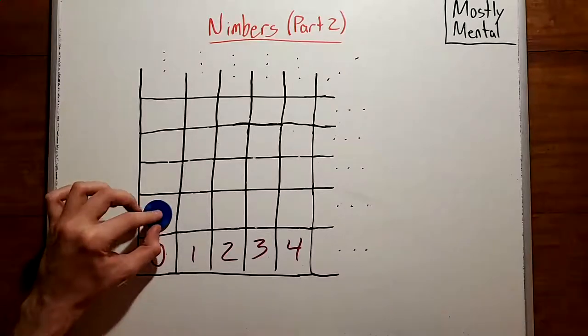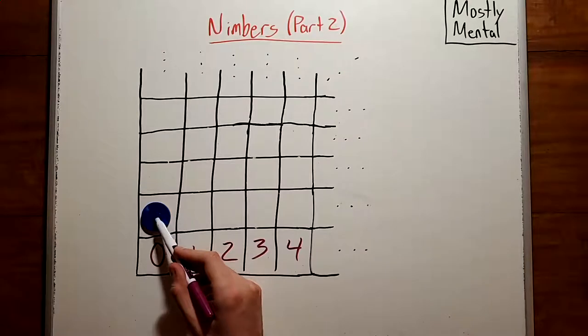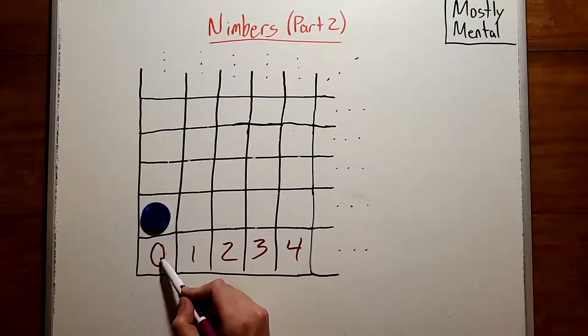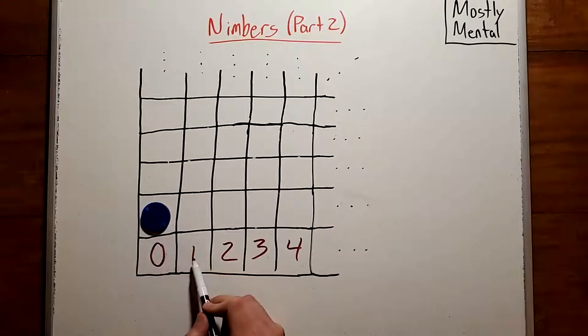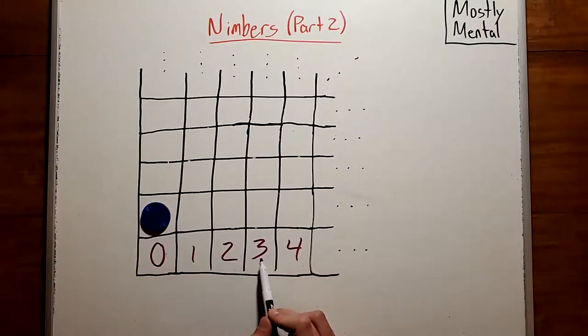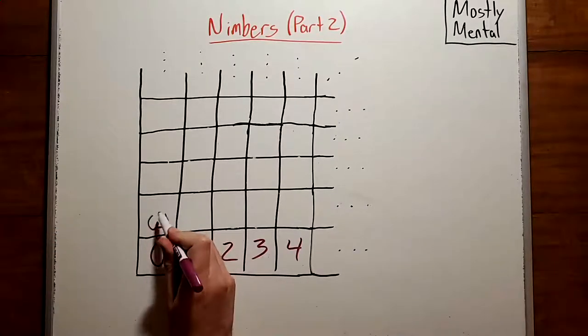Okay, now what if the coin starts here? Well, we can move it from here to a position with value 0, so this position can't have value 0. And we can move to value 1, so this can't have value 1, or 2, or 3, or any whole number. It has to be something even larger. So let's give that a name, omega.